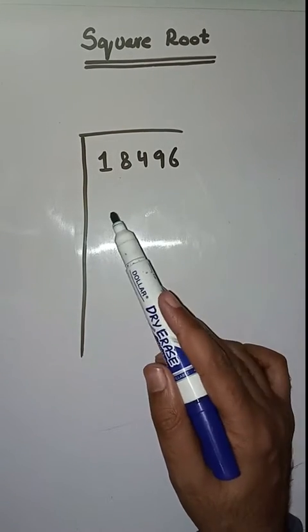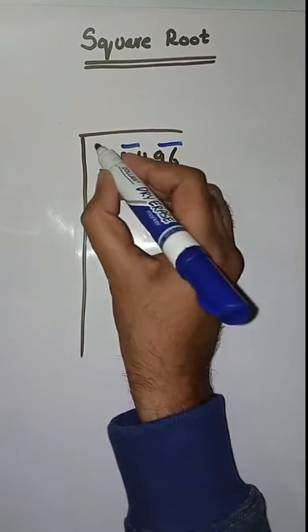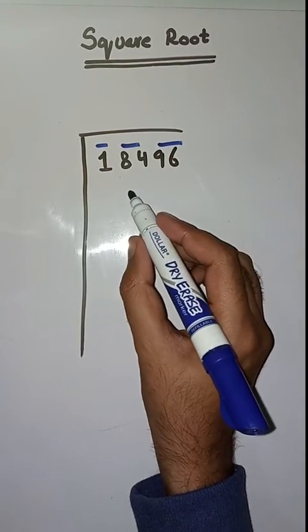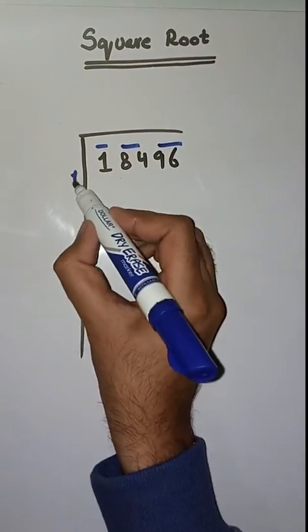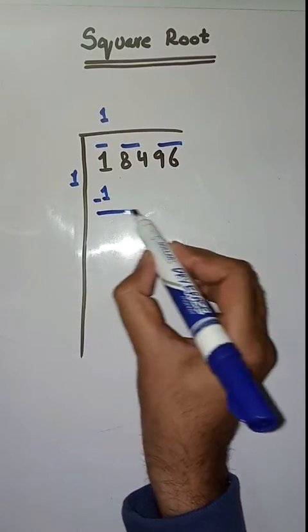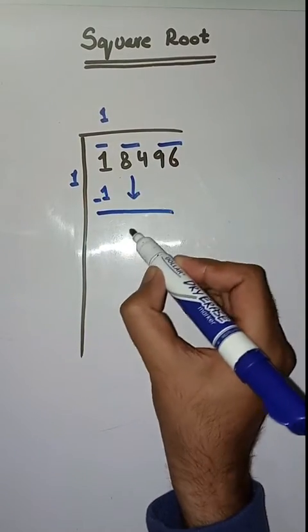From right to left like this: 96, 84, and 1. So first we have to solve 1. We take our number 1. 1 times 1 is 1. Minus that, we get 0. Next pair is 84.